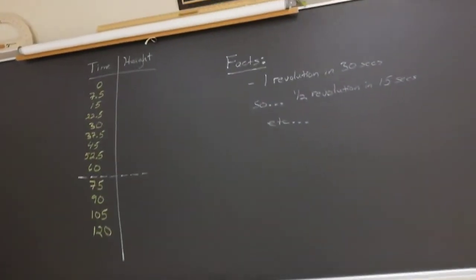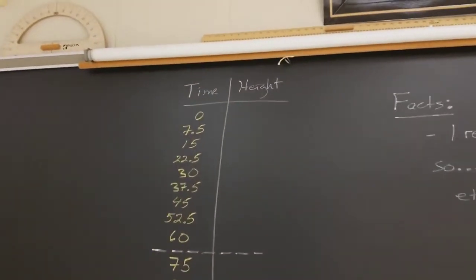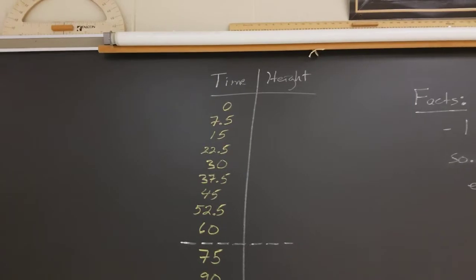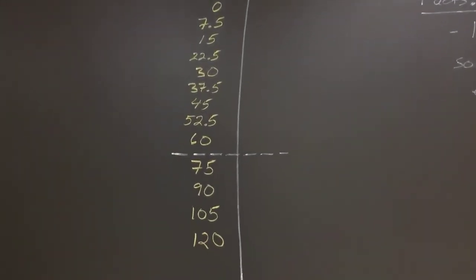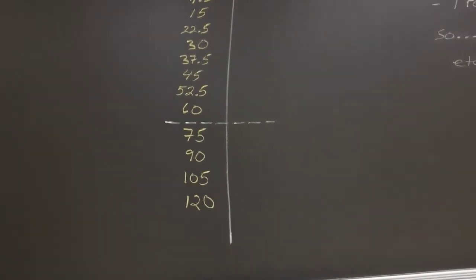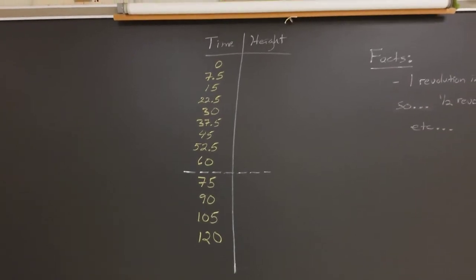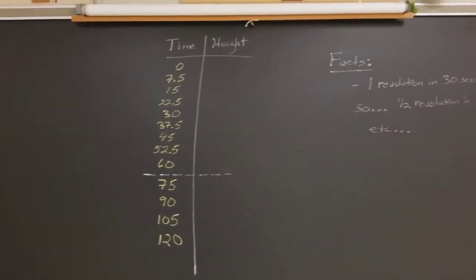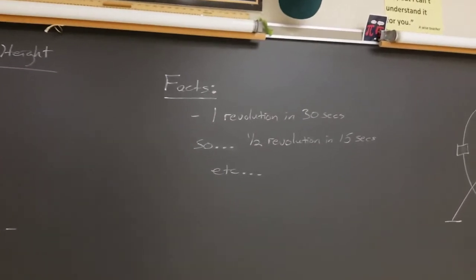Now, to help you get started, you're going to need a couple pointers here. You're going to need to create a table of values. And I'm highly suggesting that you use my time values that are shown in the table. These will correspond to particular heights that you will figure out based on these facts.